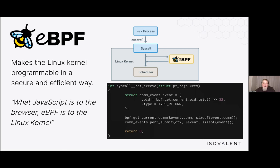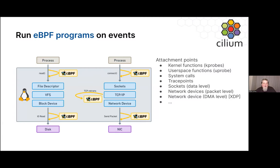eBPF also gives us the ability to manipulate those calls. In our case, we have the ability to transparently proxy traffic coming from an application based on the destination of that traffic, through another process, to better secure or manipulate traffic between applications in a Kubernetes or container orchestration environment. Everything in the Linux kernel is available to eBPF — whether a file open, a new network socket — and we can apply eBPF to all of those components.